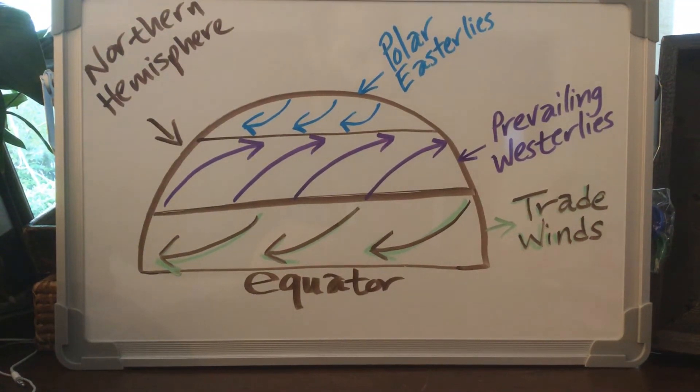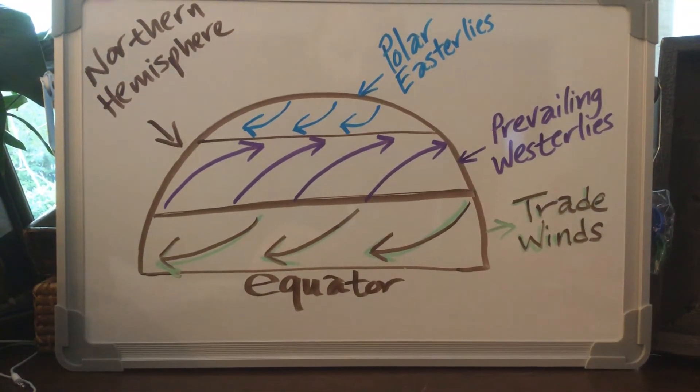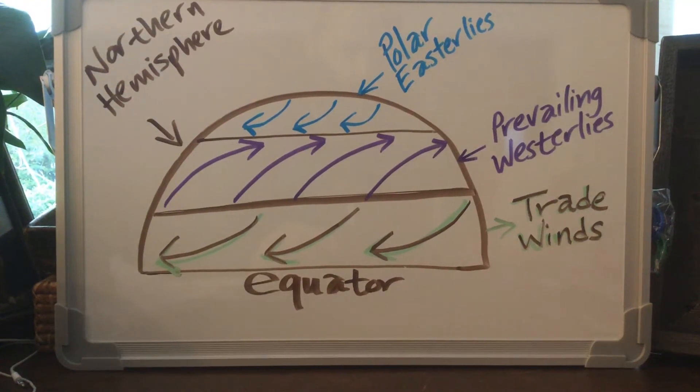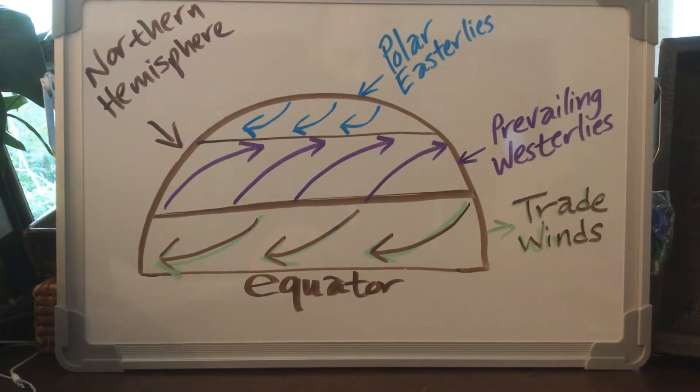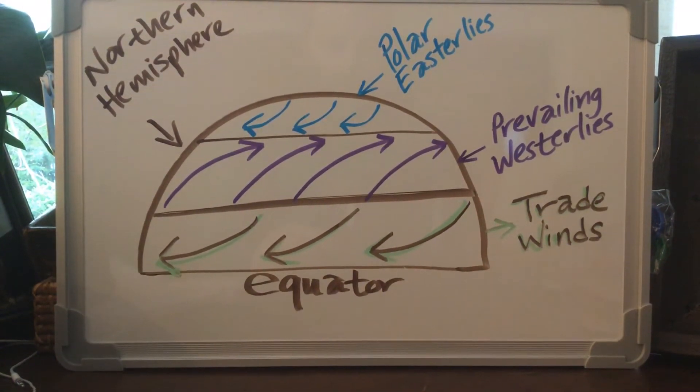Now some of you may ask why do these winds curve, and the main reason these winds are curving is because when the earth rotates these winds kind of change direction. And it's kind of a crazy little formula we're going to talk about later, but we're just going to talk about the winds today.